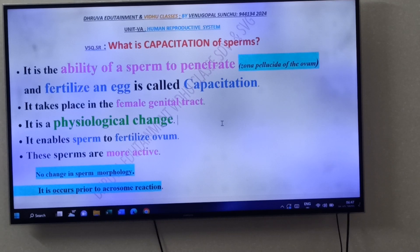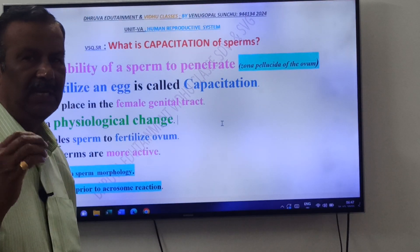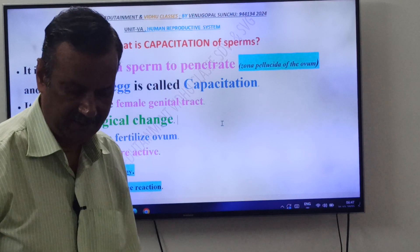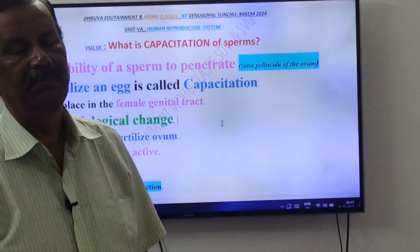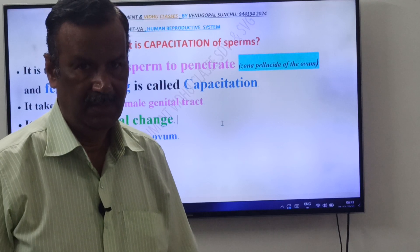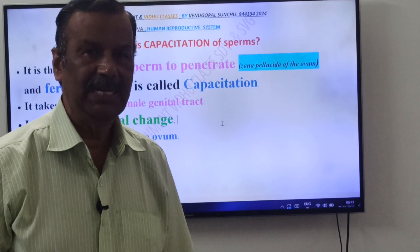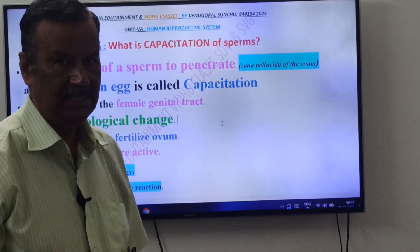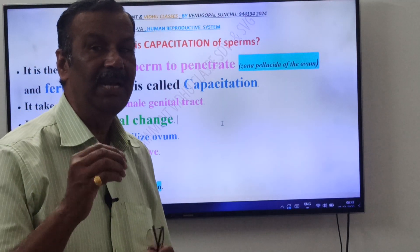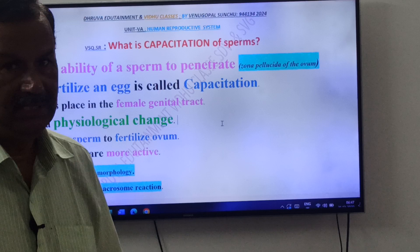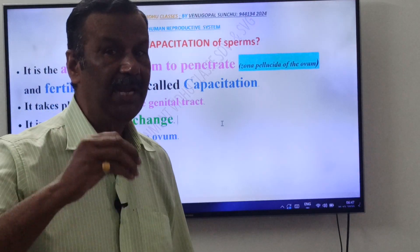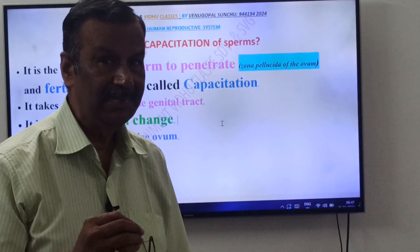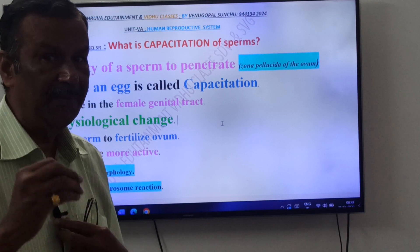Capacitation of Sperms. Friends, you know sperms are produced in the Male Reproductive System. At the time of insemination, they enter into the Vagina of the Female Reproductive System. The Capacitation takes place in the Female Reproductive Tract only. This is an M-set and NEET question.